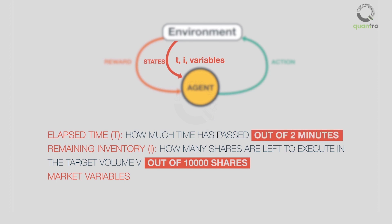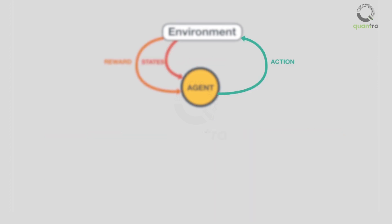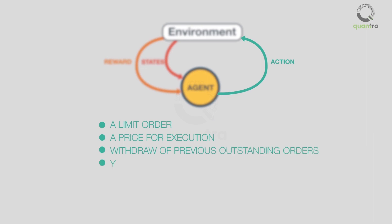We can observe the state and take action every 30 seconds for the sake of simplicity. You can think of state as input. An action is taken by the algorithm every time a state is observed as per the policy. In this case, the action consists of a simple limit order price to reposition all remaining inventory — that means an action will consist of a limit order to sell all remaining shares, along with a price for execution (the ask price) and modification of previous outstanding orders if any. You can think of action as output.